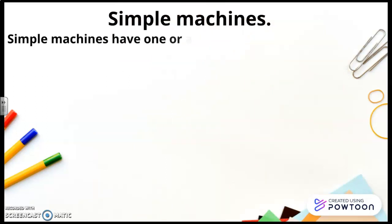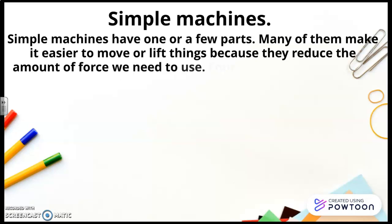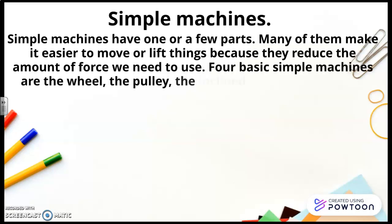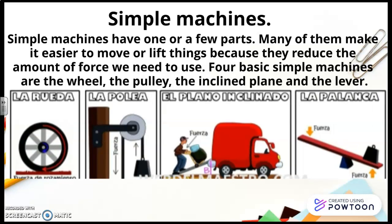Simple machines. Simple machines have one or a few parts. Many of them make it easier to move or lift things because they reduce the amount of force we need to use. Four basic simple machines are the wheel, the pulley, the inclined plane, and the lever. And here are the examples. You can see the four of them.